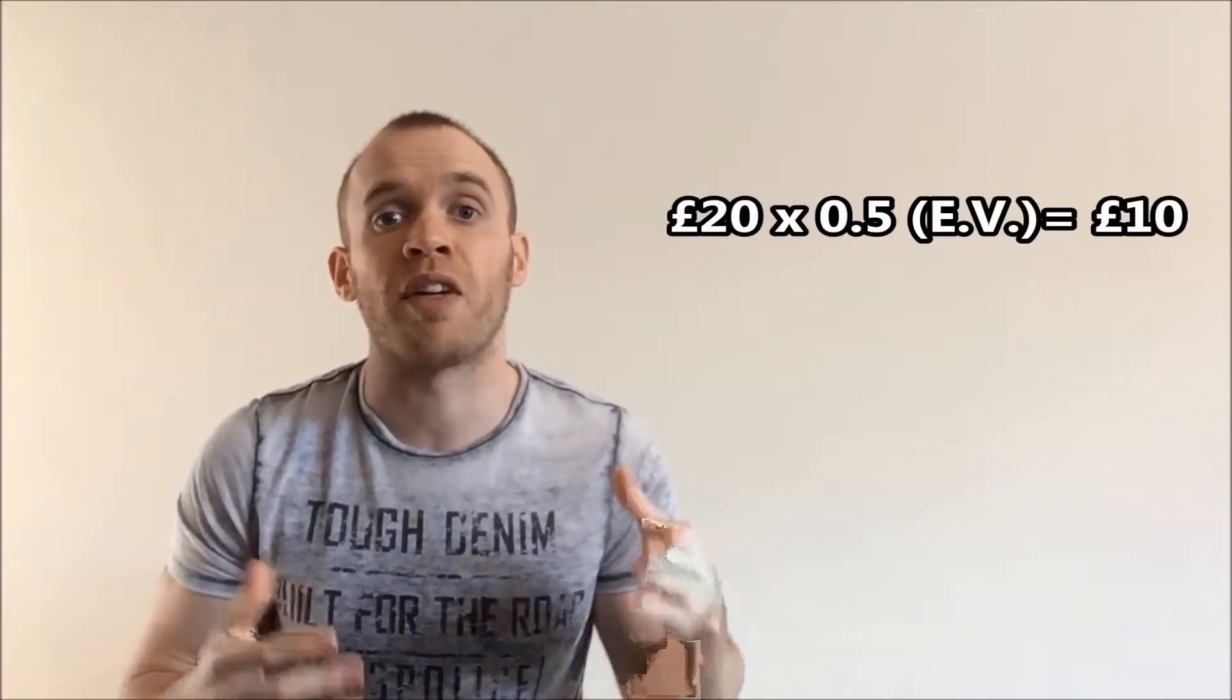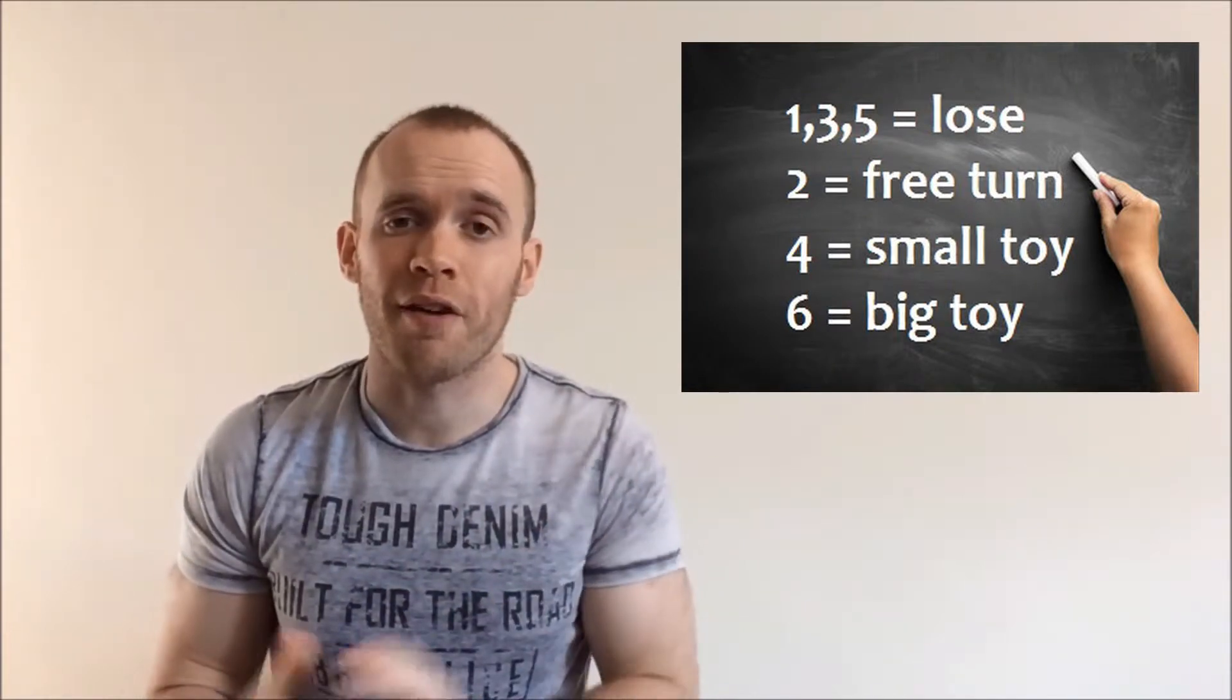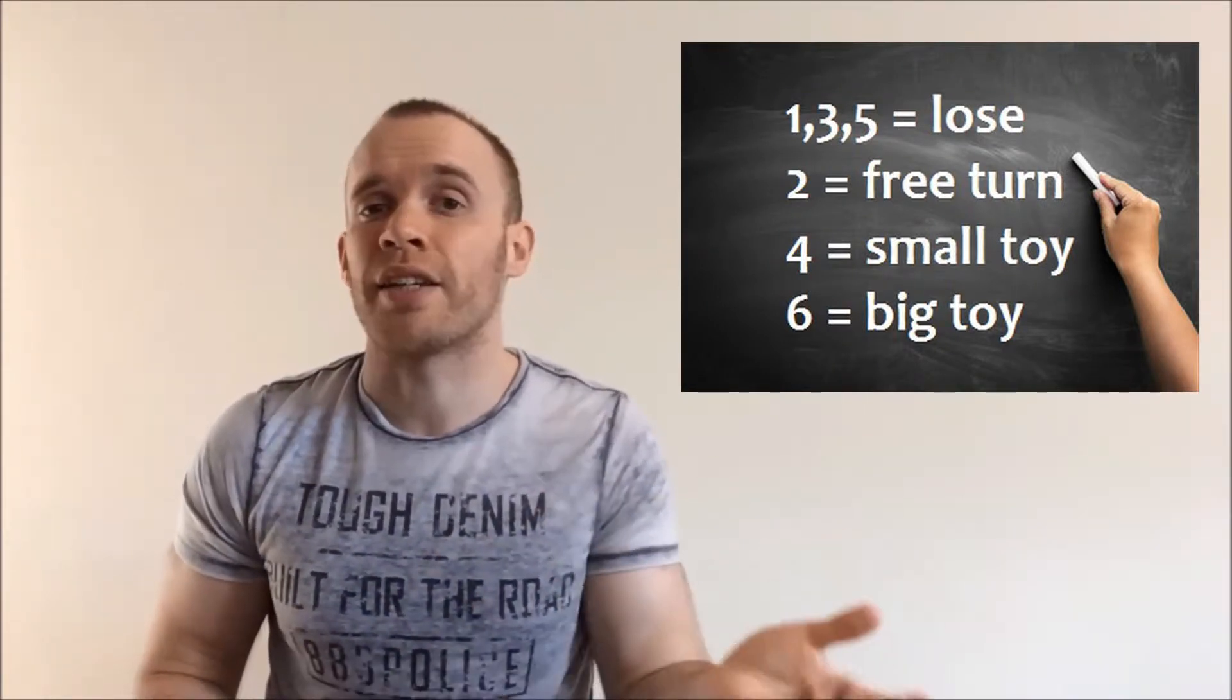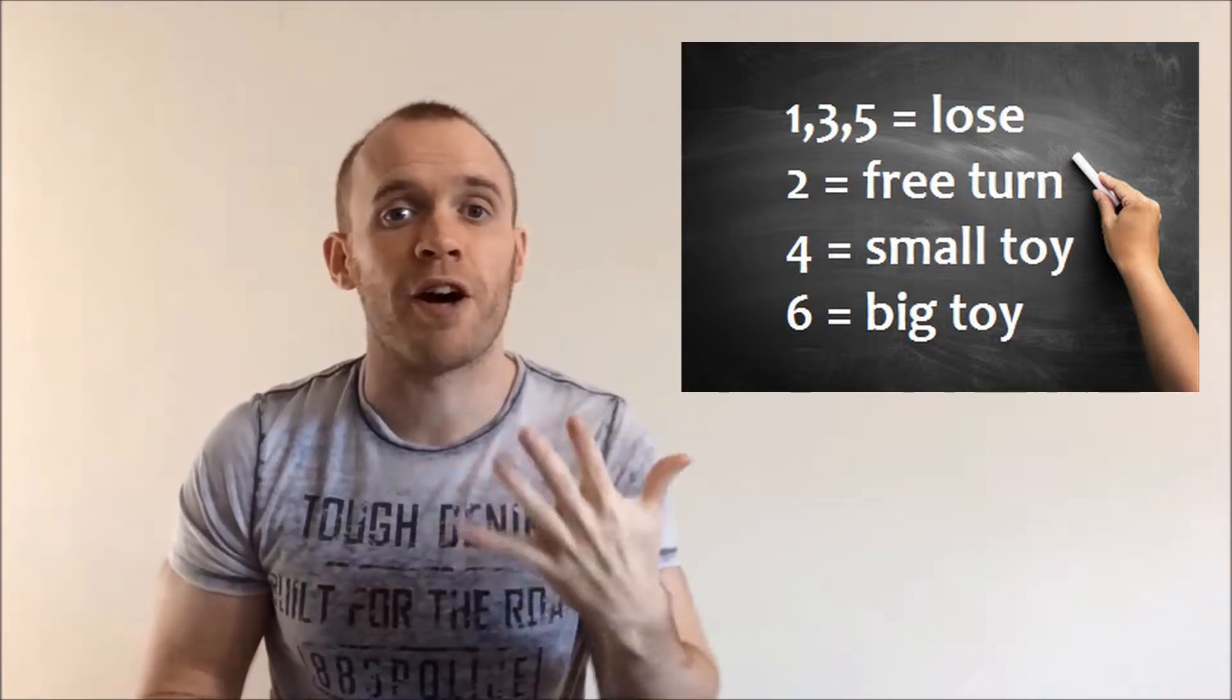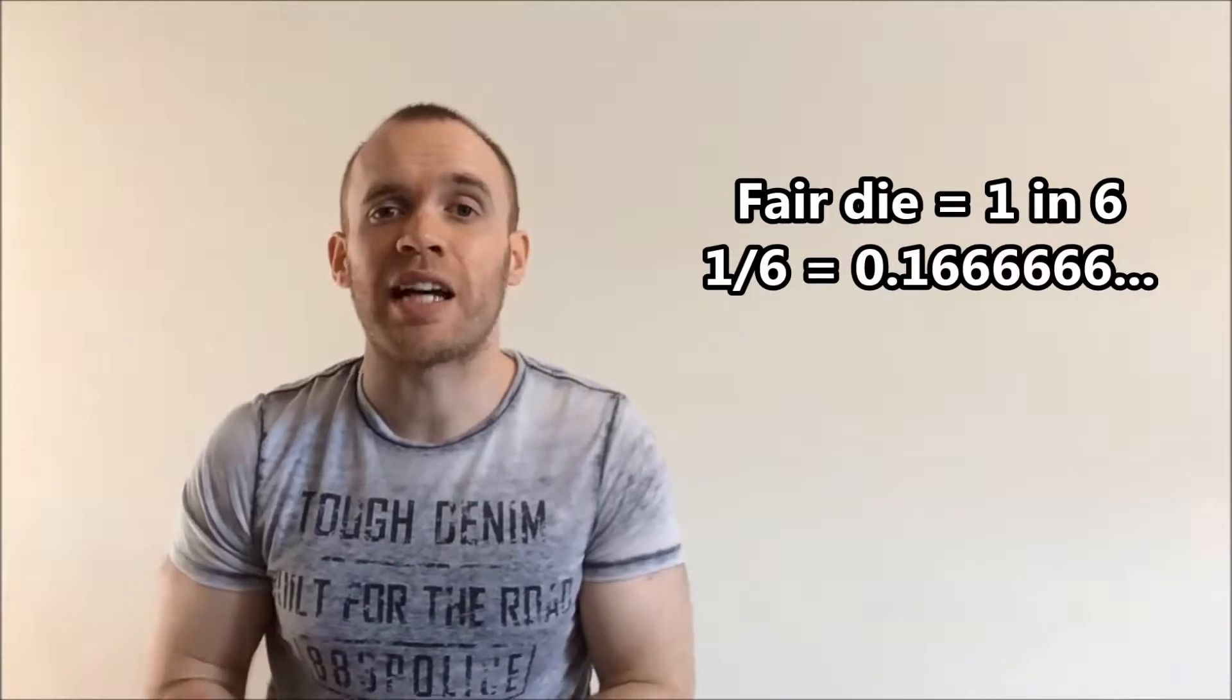Let's do one final example with a roll of a die, and this is more likely what you'll get at a fairground. So roll a 1, 3, or a 5 and you lose. 2, you get another go. 4 is a small cuddly toy and 6 is a big one. 5 pounds to play. If it's a fair die, then you have a 1 in 6 chance of each outcome, which is represented in decimal form as 1 over 6, which is 0.1666 recurring.